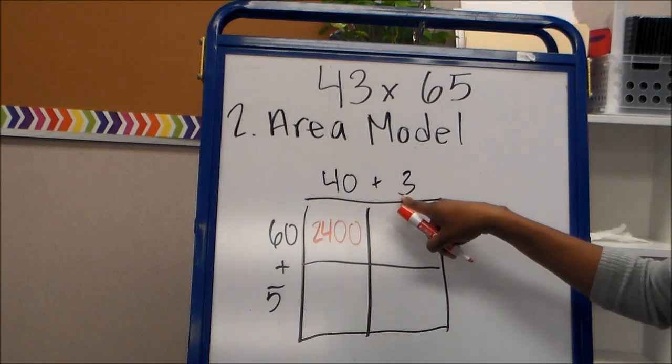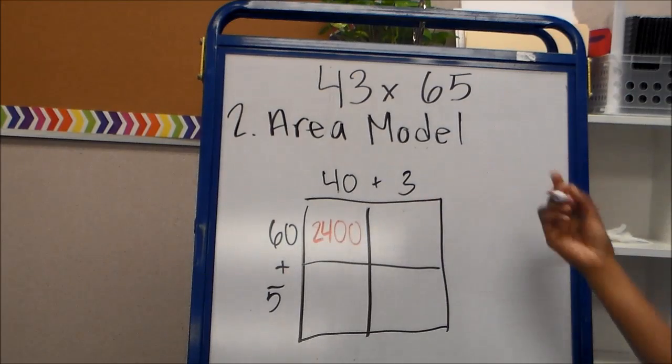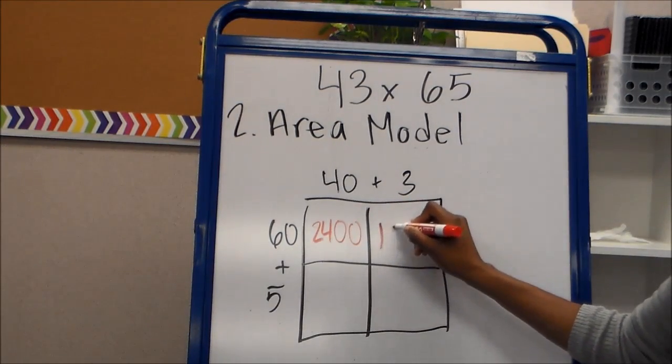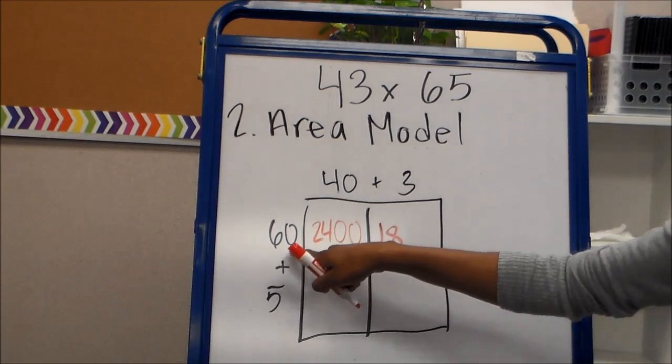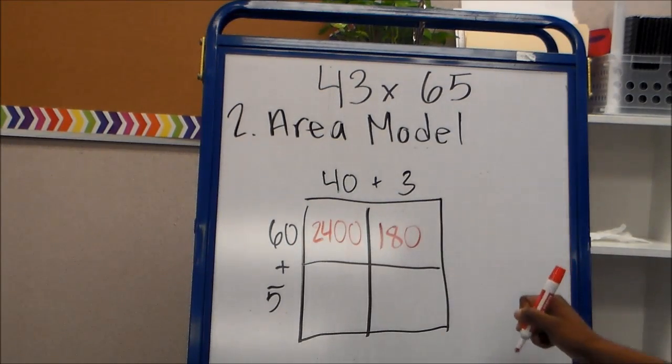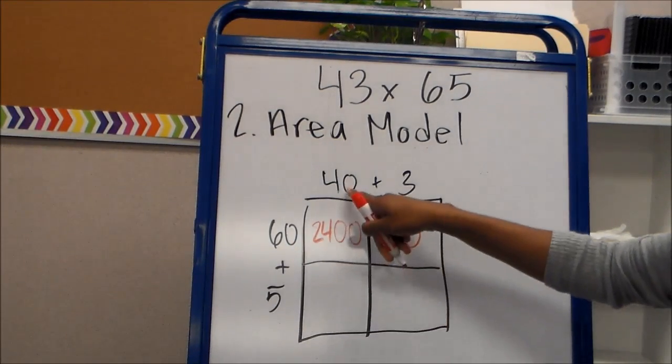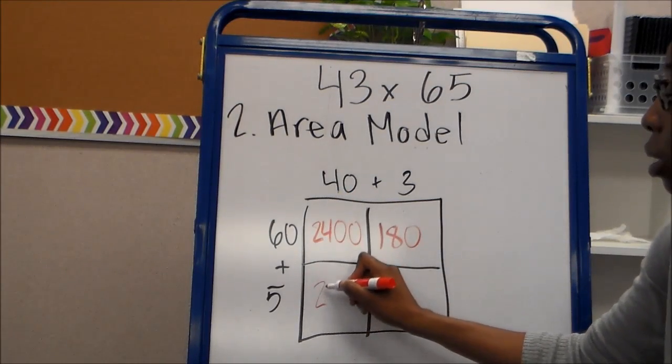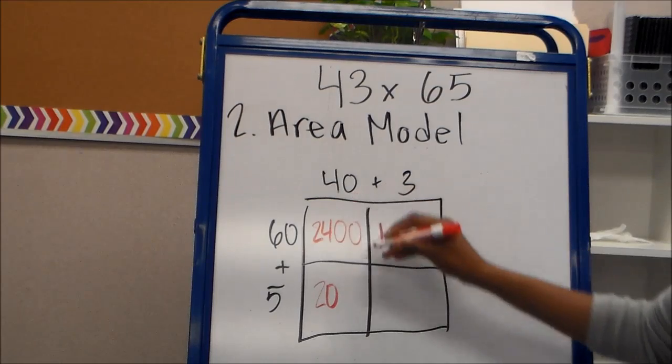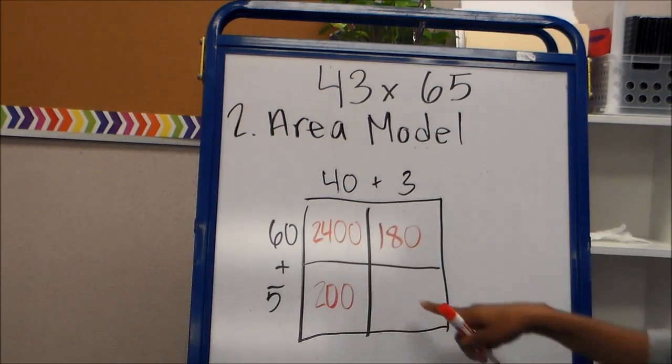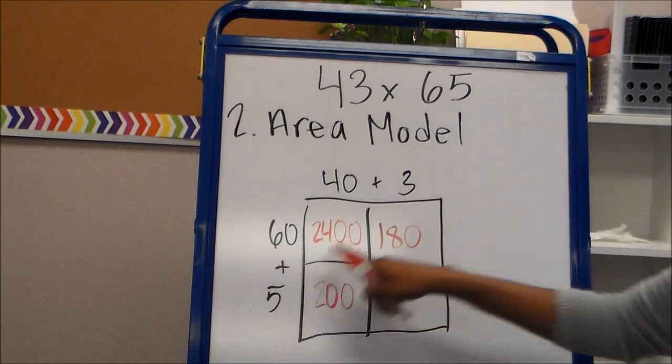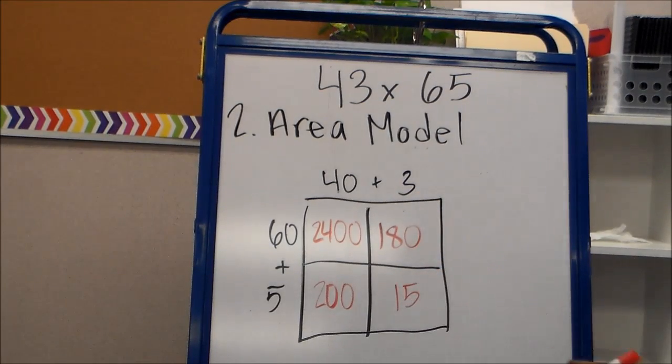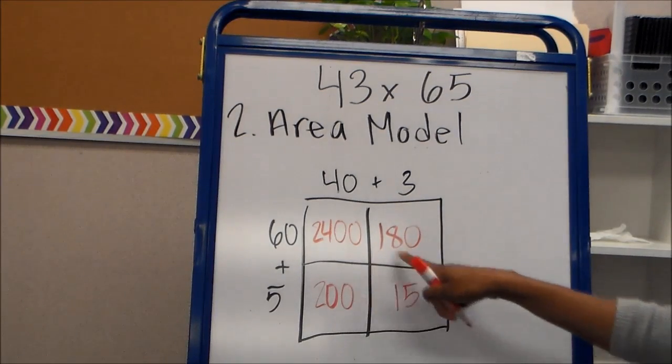Then in this box you have 3 times 60. If you don't know what that is, you have 3 times 6, which is 18. And then you have 1 extra 0 here, so you add that on. And in this box you're going to have 40 times 5. 4 times 5 is 20. And you have an extra 0 here, so you add that on. And in this box you're going to have 5 times 3, which is 15.